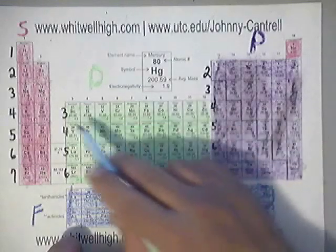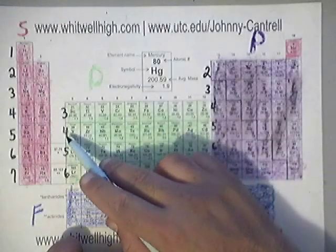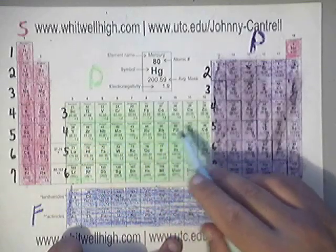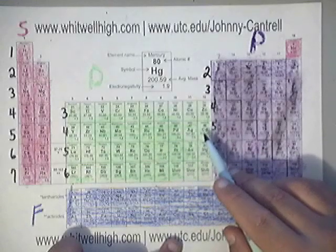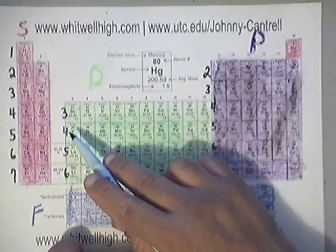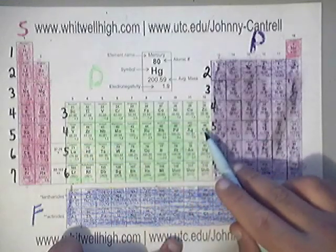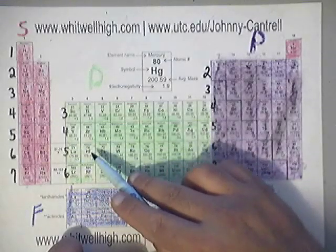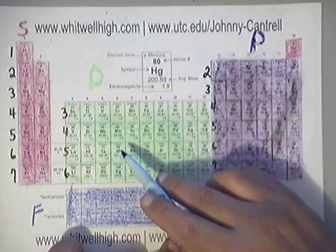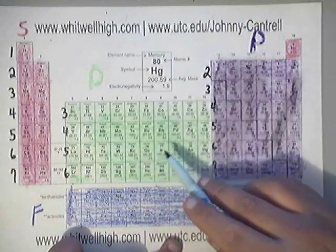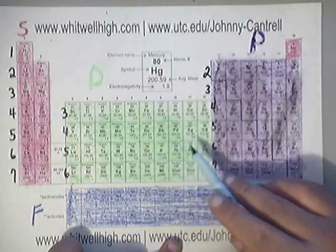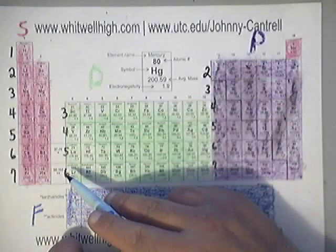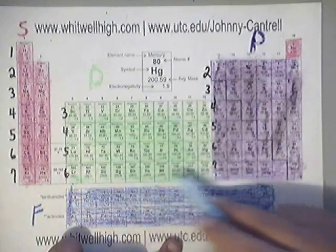So this next row is 4D1 all the way through 4D10. This one is 5D1, 5D2, 5D3, 5D4, 5D5, 5D6, 5D7, 5D8, 5D9, and finally 5D10. And this one would run 6D1 through 6D10.